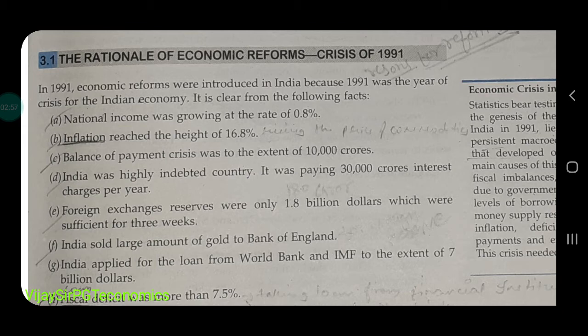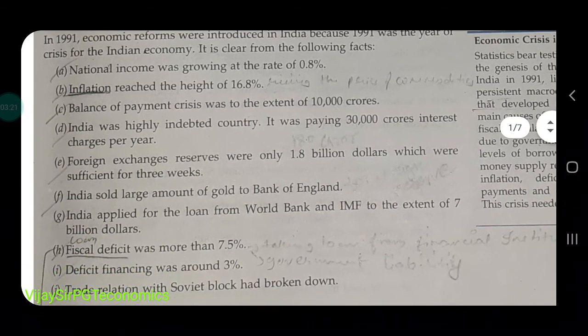The national income was growing at only 0.8 percent, which was very low. Inflation reached a height of 16.8 percent — meaning prices had risen very sharply. There was also a balance of payment crisis to the extent of 10,000 crore rupees.